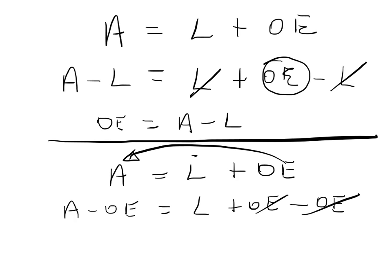Owner's equity minus owner's equity cancel each other out. Just left with the liabilities. And if we just rewrite that equation to put the liabilities on the left-hand side of our equal sign, liabilities equals assets minus owner's equity.